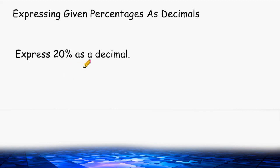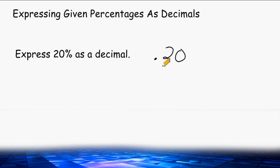For 20%, instead of saying 20%, we can read this as 20 cents. If you know how to write 20 cents, write a decimal and then the number 20. Remember, when digits after a decimal end in zeros, you can eliminate those trailing zeros. So we get rid of the zero, and 20% as a decimal is expressed as 0.2.